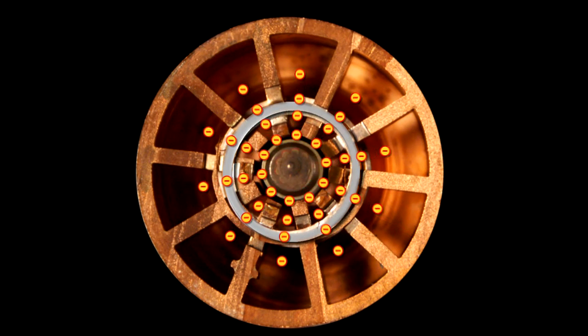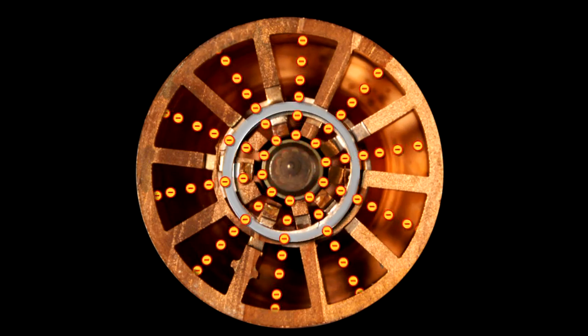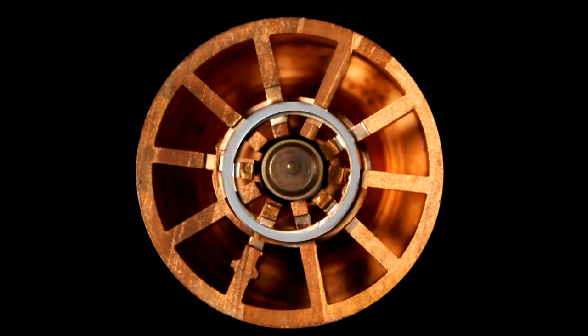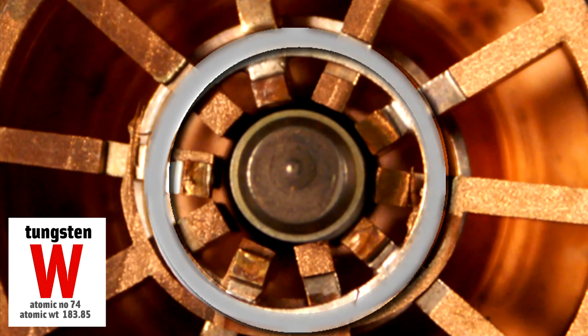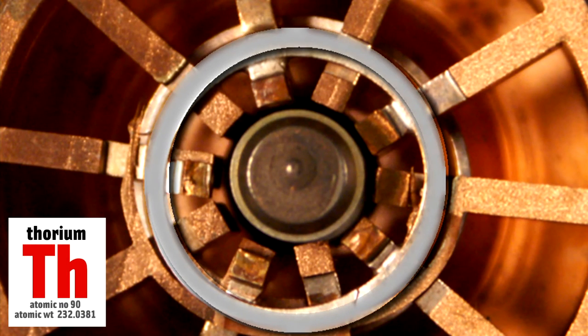You apply a large voltage across both the inner filament and the circular copper outside. This voltage boils electrons off the center filament and they fly toward the circular copper section. The filament is made from tungsten and thorium – tungsten because it can withstand high temperatures, and thorium because it's a good source of electrons.